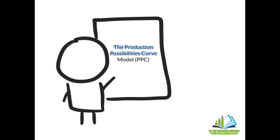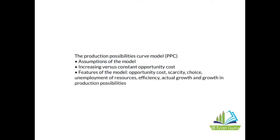The production possibilities curve model is the first economic model we will study in economics. This is going to be a slightly longer lecture. I'm going to focus on the production possibilities curve model, talk about the assumptions of the model, increasing versus constant opportunity costs, and the features of the model — opportunity cost, scarcity, choice, unemployment of resources, efficiency, actual growth, and growth in production possibilities.